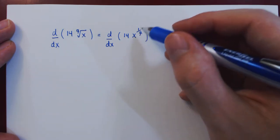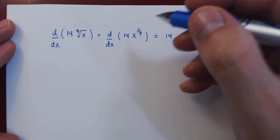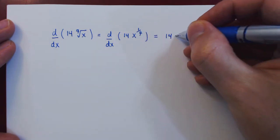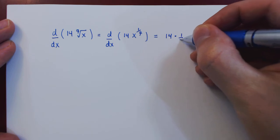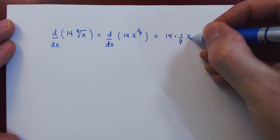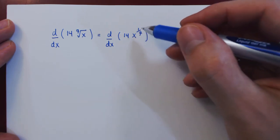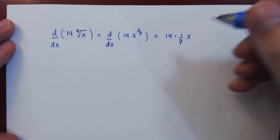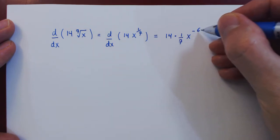Well, since we have a power of x, we simply apply the power rule. So we bring down the exponent and subtract 1 from the original exponent. 1 over 7 minus 1 is negative 6 over 7.